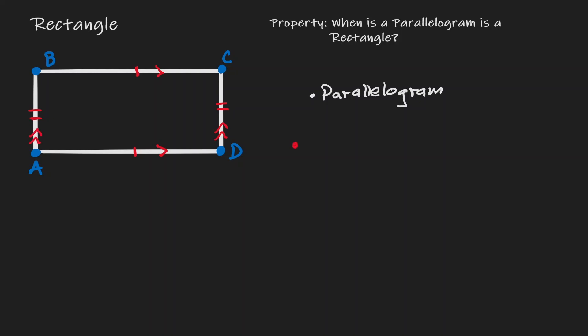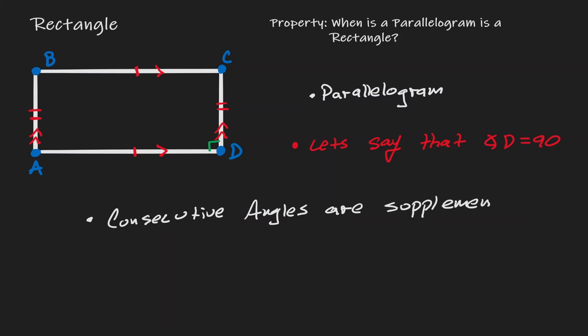Let's say that there is one angle whose measure is 90 degrees. If one of the angles has a measurement of 90 degrees, then this is sufficient information for us to claim that the parallelogram is a rectangle. Because remember that in a parallelogram, consecutive angles are supplementary. So if angle D is 90 degrees, then angle C must also be 90 degrees — they are consecutive, and the other angle needed to add up to 180 is 90.